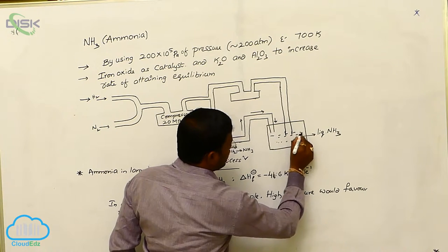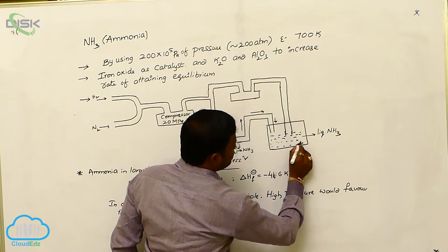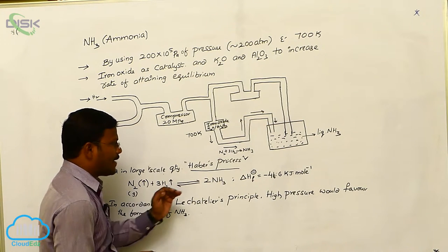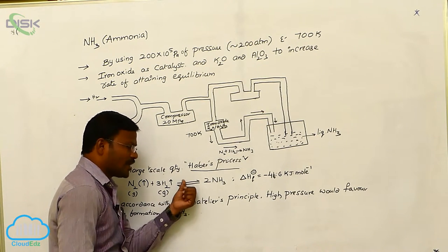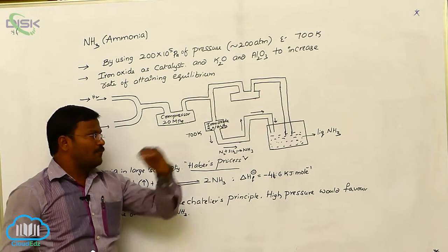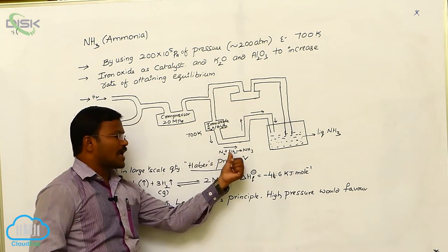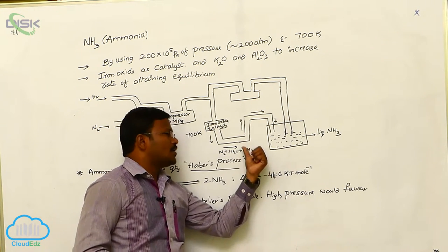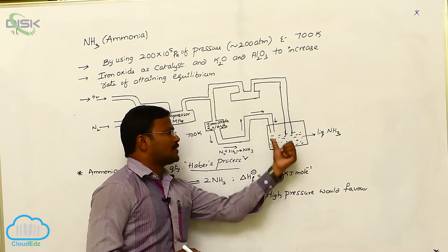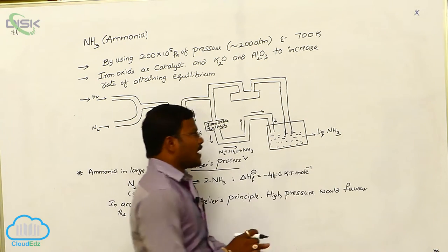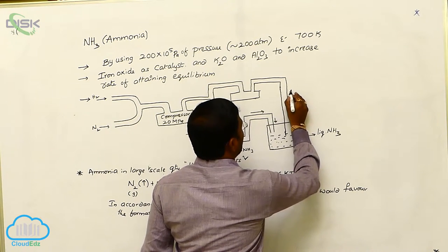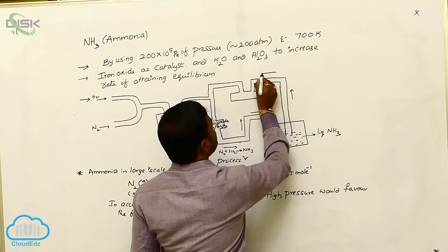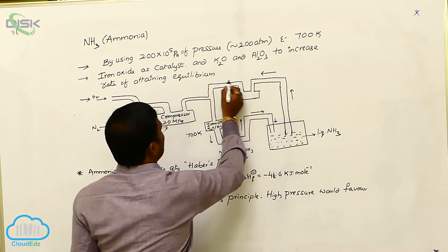The liquid ammonia is collected in the collection chamber. As mentioned, there are two reactions simultaneously occurring in Haber's process: forward reaction and backward reaction. In the forward reaction, nitrogen reacts with hydrogen gas to produce ammonia, which is collected in this chamber. Sometimes a small amount of ammonia dissociates back into nitrogen and hydrogen gases.